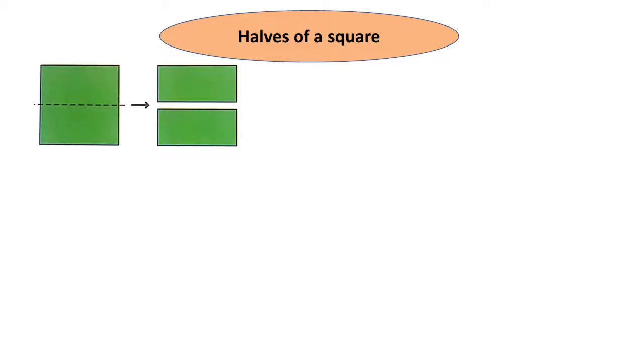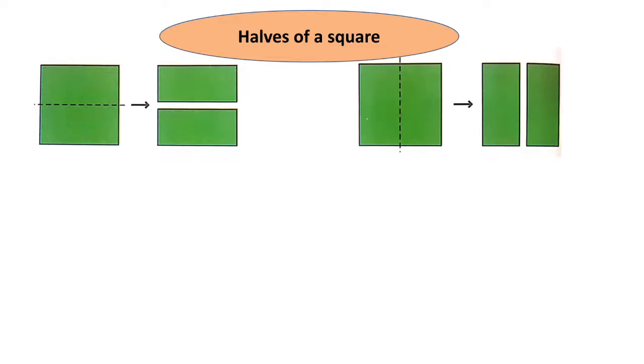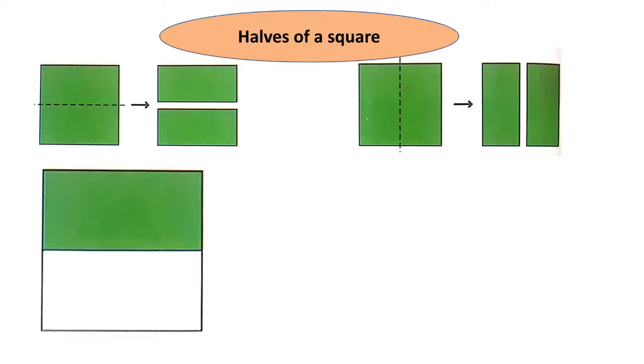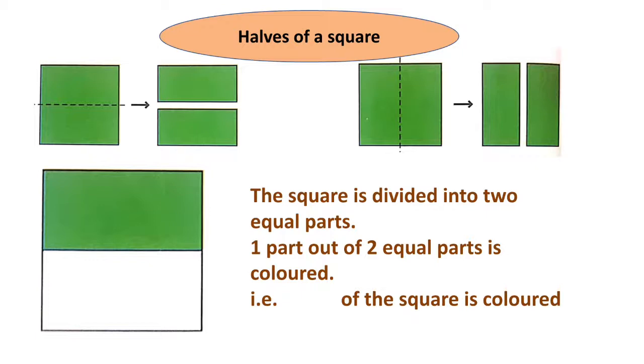Look at this square, it is divided into two equal parts. It can be divided horizontally and vertically. The square is divided into two equal parts. One part out of two equal parts is colored. That is one half of the square is colored.